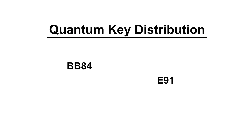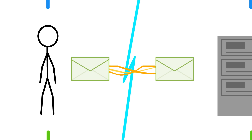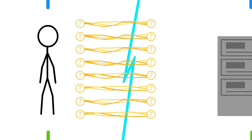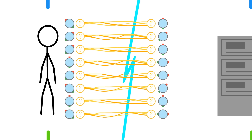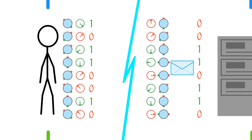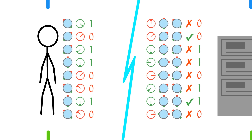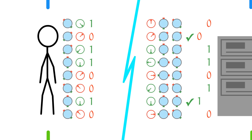There's another one called the E91 protocol that takes advantage of quantum entanglement. This one's a little more complicated. Instead of the server generating a random bit sequence, you both receive half of a bunch of entangled qubits from a trusted third party. You and the server then randomly pick from three orientations to measure your own half, and then compare orientations to note the ones that were the same.